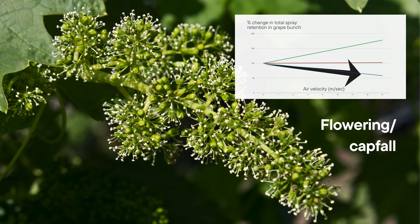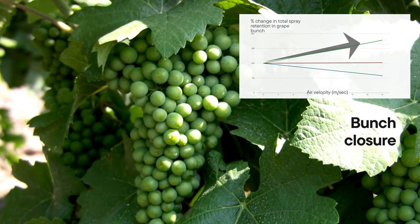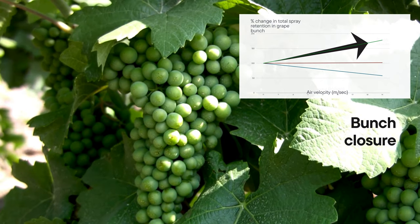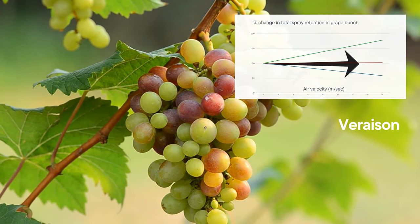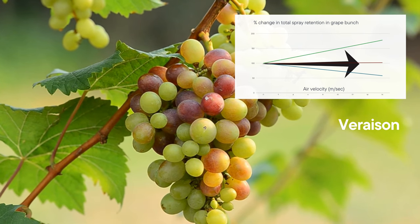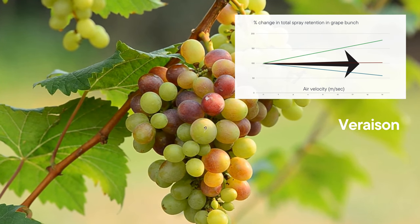As soon as you start adding air, the faster the air goes the less and less deposit you've got on that inflorescence. At bunch closure, more air helps — pushing it through — and it varies, with more air probably spreading it around the outside. You've got bunch closure already and the air didn't do heaps.